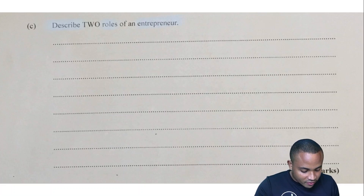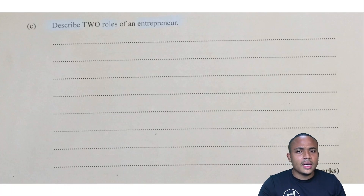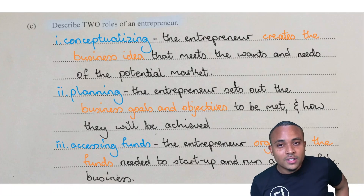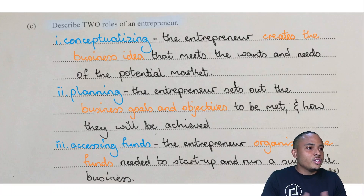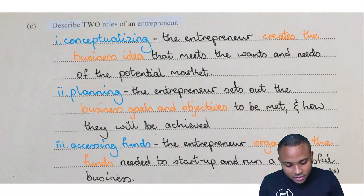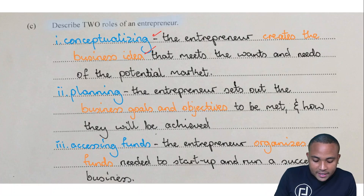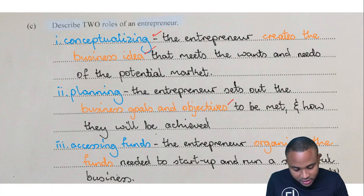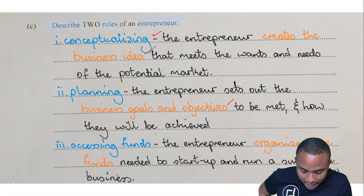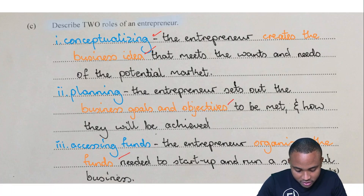Question c: describe two roles of an entrepreneur for four marks. The roles of the entrepreneur come again from our syllabus. When writing the answer you give two, but we're giving you three here. The first one is conceptualizing, where the entrepreneur creates the business idea that meets the wants and needs of the potential market. The second is planning — the entrepreneur sets out the business objectives and goals to be met and how they will be achieved.